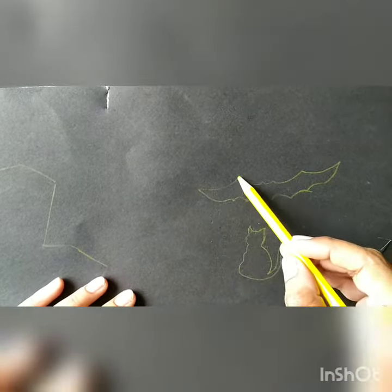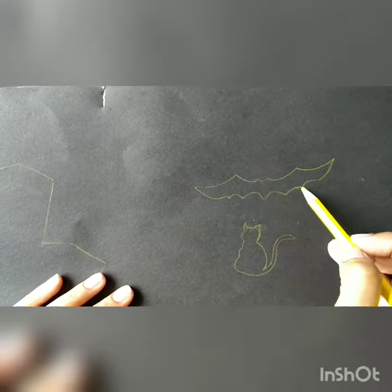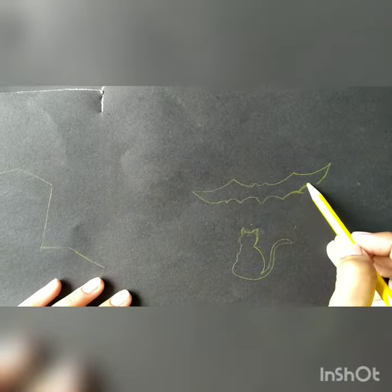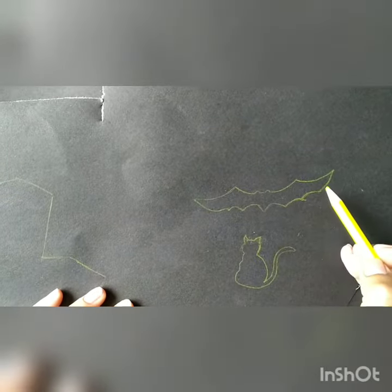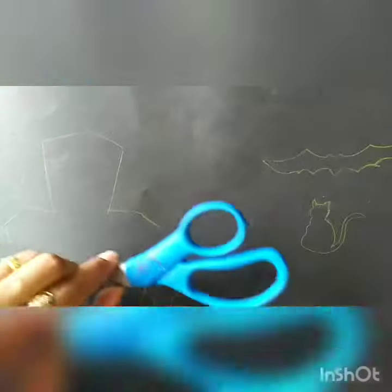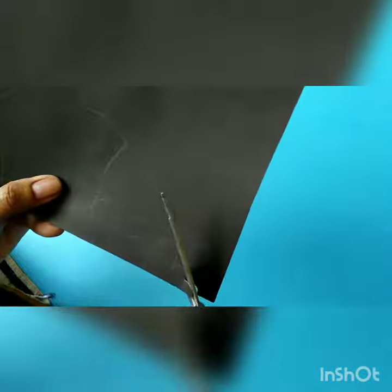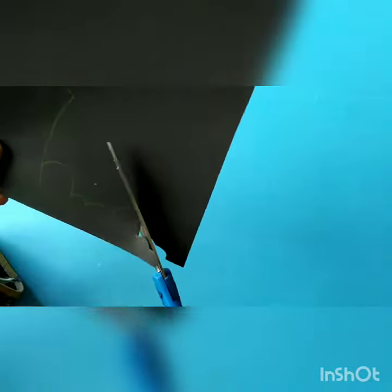Students, I am going to make a horror scene. For this I draw a bat and a cat. You can choose any other objects also. Now cut them out — students, use the scissors very carefully.